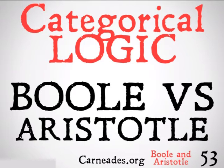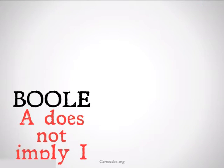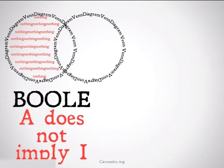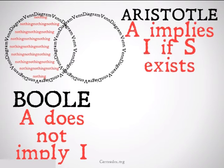The important difference is that Aristotle assumes the existence of the subject when working with universal statements. For Boole, A does not imply I — the all statement doesn't imply the particular, the some statement. However, for Aristotle, A does imply I if S, if the subject, does exist.